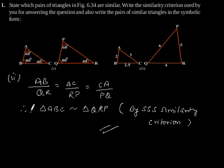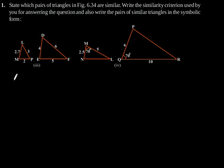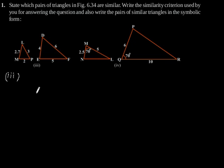Now the third part. Considering figure 3, we can observe that the corresponding sides are not proportional, so the three given triangles are not similar.